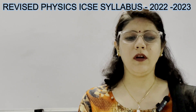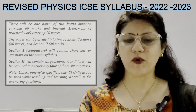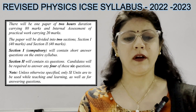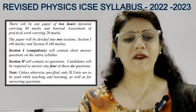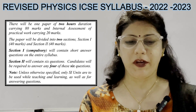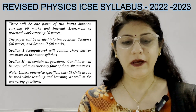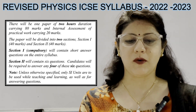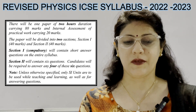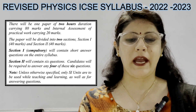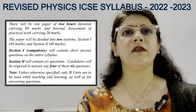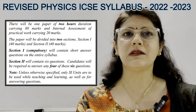First of all, there will be one paper of 2 hours duration carrying 80 marks and internal assessment of practical work carrying 20 marks. The paper will be divided into two sections: Section 1 with 40 marks and Section 2 with 40 marks. Section 1 is compulsory and will contain short answer questions on the entire syllabus, and Section 2 will contain 6 questions. Candidates will be required to answer any 4 of these 6 questions. This means the pattern remains the same as before the COVID era.